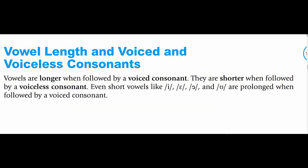Vowel Length and Voiced and Voiceless Consonants. Vowels are longer when followed by a voiced consonant and shorter when followed by a voiceless consonant. Even short vowels like i, e, u are prolonged when followed by a voiced consonant. For example, i followed by a voiced consonant sounds like i as in big.